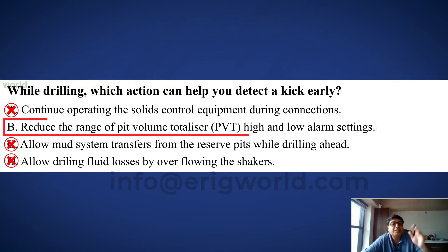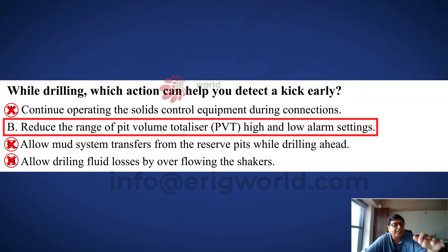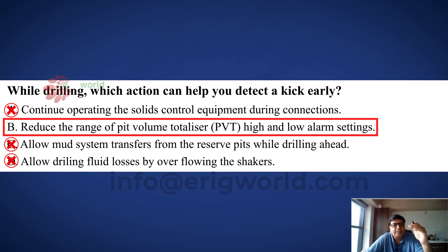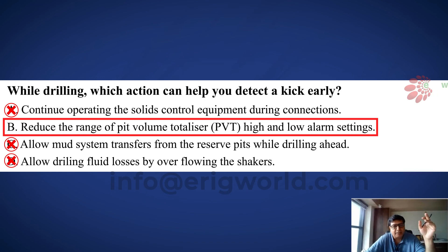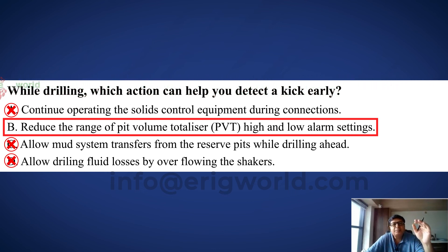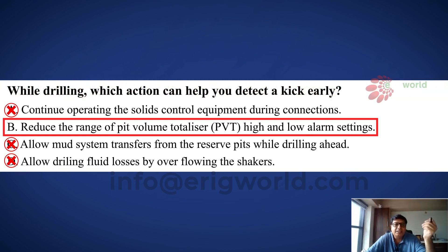The right option is: Reduce the range of pit volume totalizer (PVT) high and low alarm. For example, if you set your pit level alarms at 10 barrels high and 10 barrels low, the alarm will only sound when the pit level increases or decreases by 10 barrels. But if you set the pit alarm to 2 barrels, you will get an early warning whenever there is an increase of just 2 barrels. This reduces the size of kick detected, making it the correct answer.